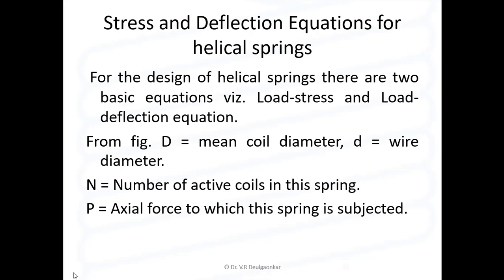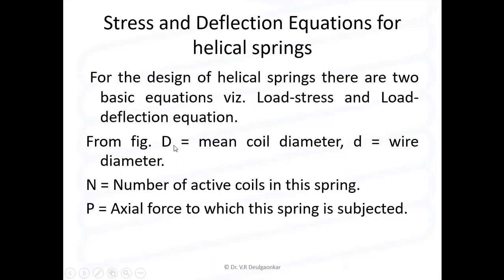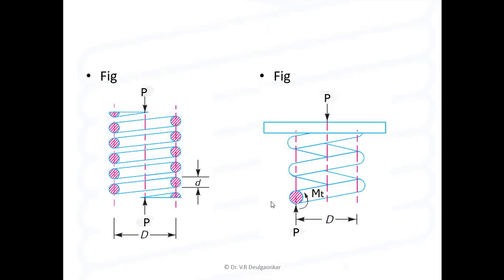From the figure we find the following dimensions. Capital D is the mean coil diameter, small d is the wire diameter, mt is the torque, n is the number of active coils in the spring, and P is the axial force to which the spring is subjected.